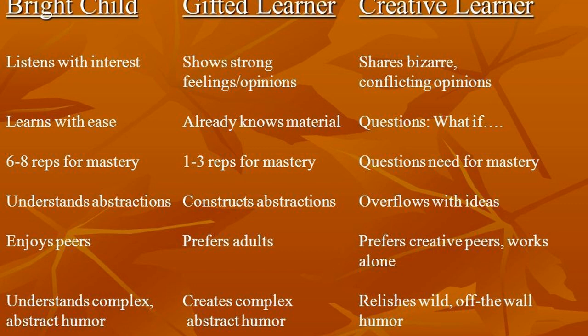A bright child learns with ease because they're following the rules, following along, paying attention — learning is easy for them even though they're working hard at it. A gifted learner may already know the material, having watched a documentary or seen a demonstration. The creative learner, on the other hand, is going to question and ask 'what if?' because their thinking is very atypical — not the most obvious answer. They'll come up with off-the-wall responses that make perfect sense to them but don't to anyone else. Training the creative learner to communicate their ideas so others understand is really important.